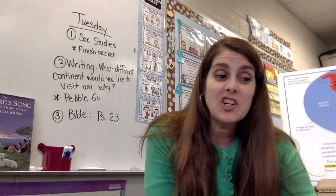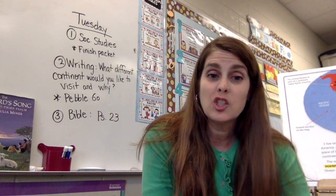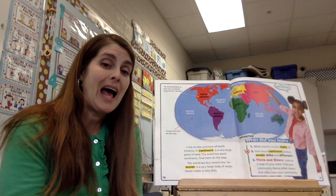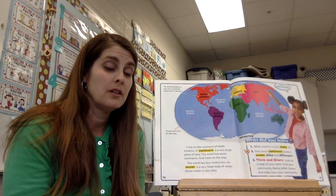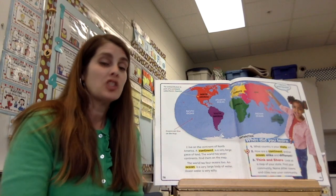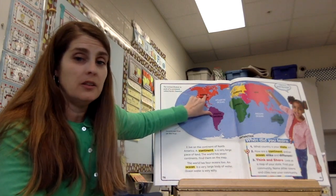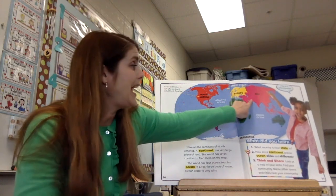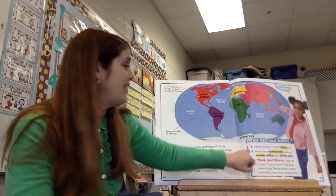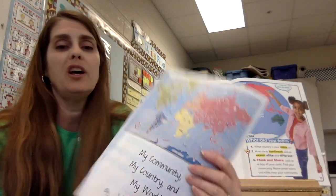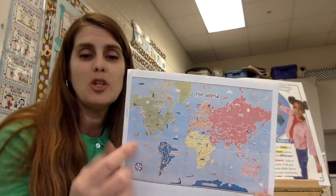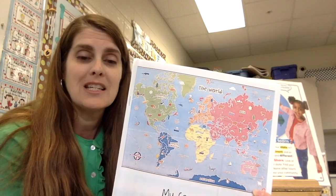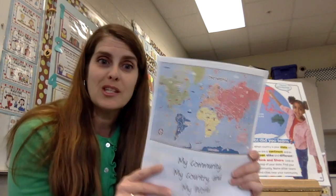Friends, happy Tuesday. We're going to start today with social studies. I'm going to switch over here so you can see these continents again. Do you remember how many continents there are in the world? Seven. There's seven continents — North and South America, and we live in North America. There's Africa, Europe, Asia, Australia, and then Antarctica. If you look at the front of your community booklet, you can see them. Each one is a different color, and it shows some of the animals and things that are famous in those different continents. We're going to finish this booklet today.